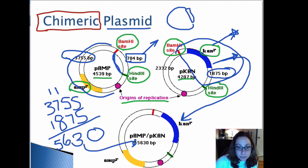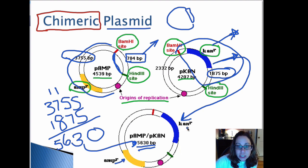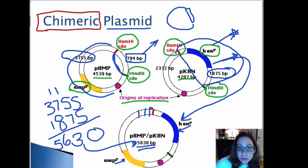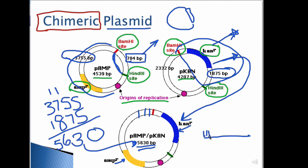This new chimeric plasmid, P-AMP/P-CAN, has a total size of 5,630 base pairs. You can now use this plasmid — which contains both the ampicillin resistance gene and the kanamycin resistance gene — along with the multiple cloning sites to clone in a DNA of interest from any organism, using both resistance genes as selectable markers.